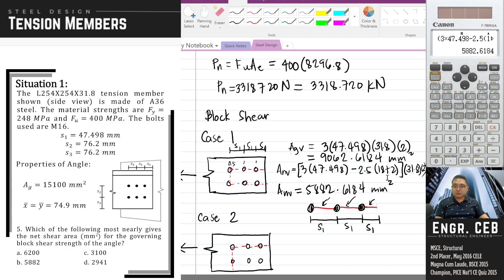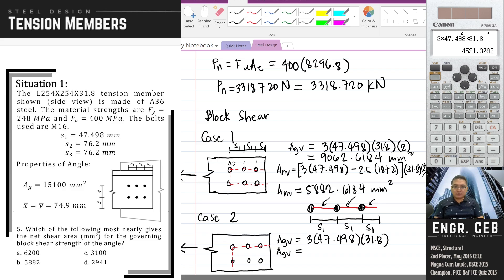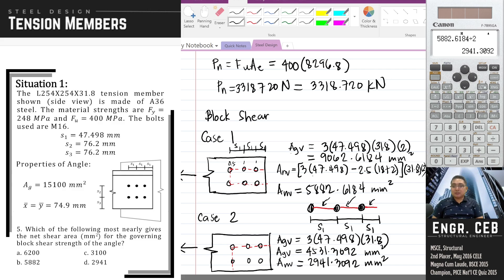For case two, the AGV is the same as case one but without the multiplier 2, since we only have one line of shear path. So AGV = 3 × 47.498 × 31.8 = 4,531.3092 mm². For ANV in case two, it is also the same but without the factor 2, so we can simply divide 5,882.6184 by 2. These are the shear areas for case two.